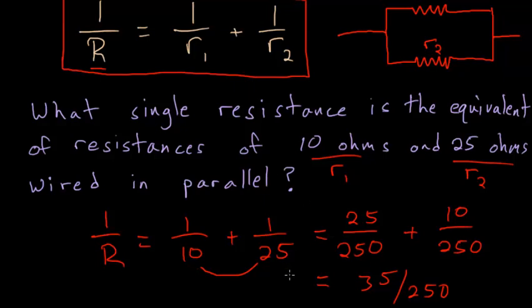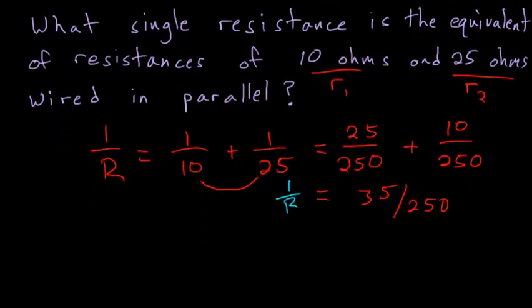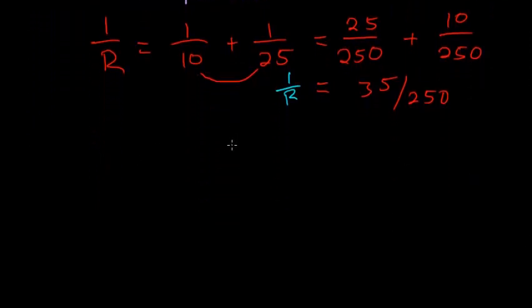But this answer so far is only 1 over the total resistance. So what we need to do is take the reciprocal of each side. Basically we can just flip both sides of it. So R over 1 is equal to 250 over 35.